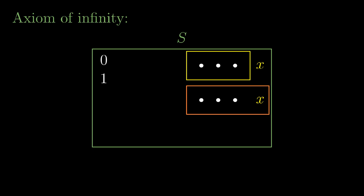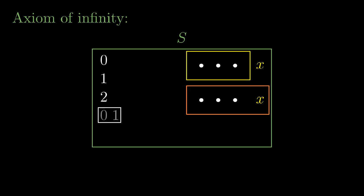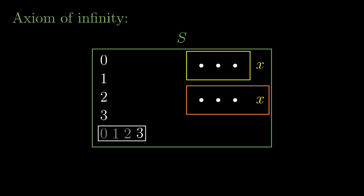We continue: 1 is the set containing 0. If we add 1 into it as an element we obtain a set containing 0 and 1, that is the number 2. When we add the number 2 into 2 we obtain the number 3, and so on.